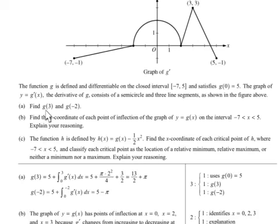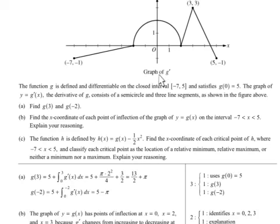If I want to find g(3) and g(-2), to find g(3), you have to start at 5 — so at 0, which is 5. If I want g(3), you start with a value of 5 at 0 and you have to sum up the change, because g prime is the change. This is g prime and I want g, so I have to integrate this. I integrate from 0 to 3 to see the change from 0 to 3.